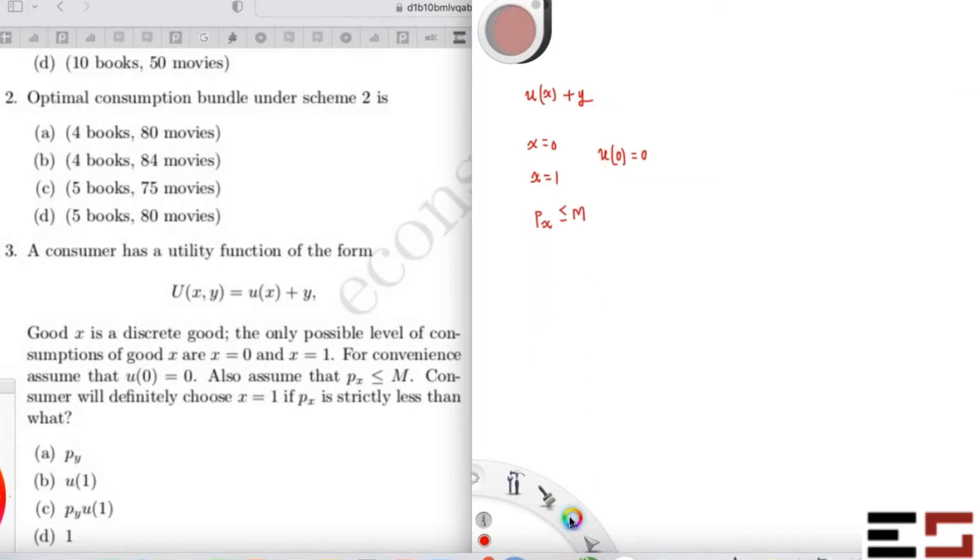So how will you do this problem? The goods are perfect substitutes. You don't need to apply any rule. If you just think about it, there are only two choices. Either you choose 0 units of X, or you choose one unit of X.